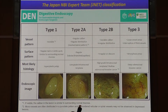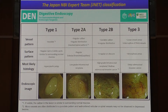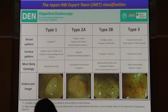The JNET classification is composed of four subgroups according to vessel patterns and surface patterns of the lesion. Because of the limited time, let me simply explain the subgroups. If you see the images as shown in this slide, each image corresponds with type 1, type 2A, type 2B, and type 3.